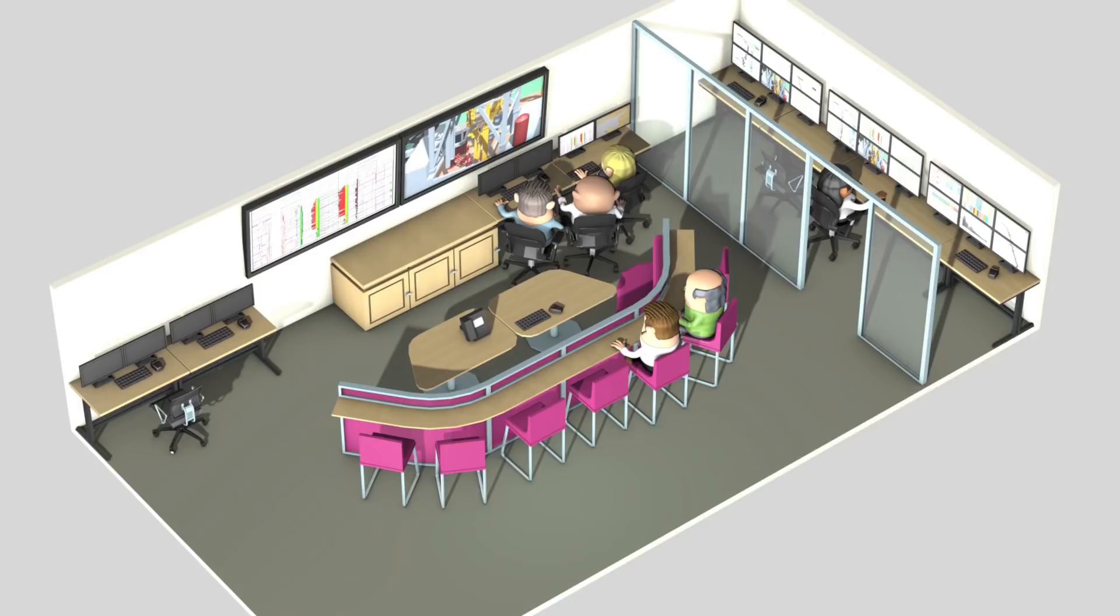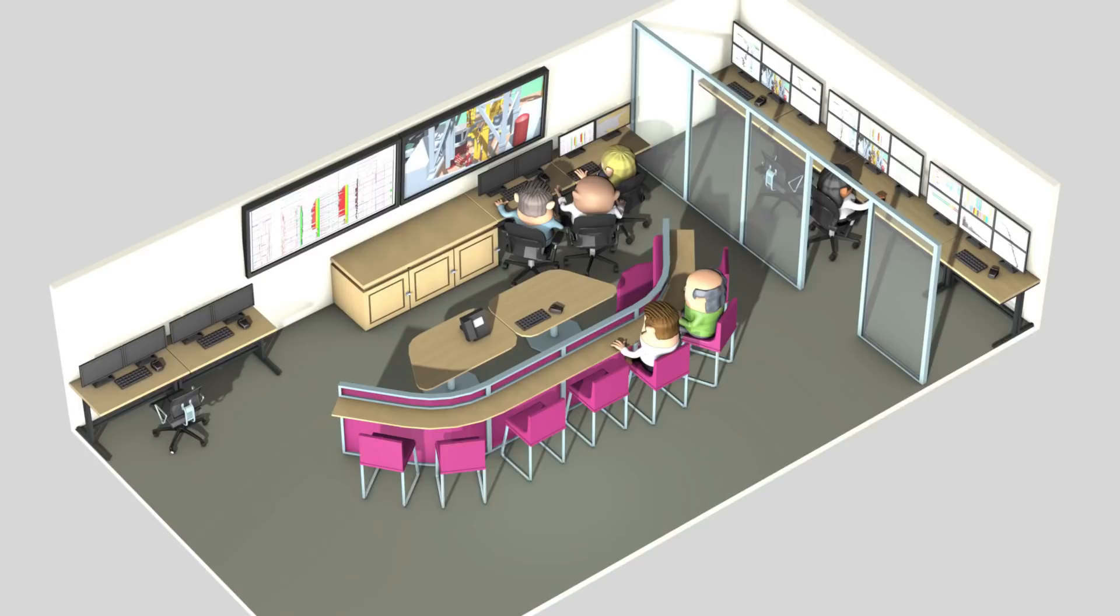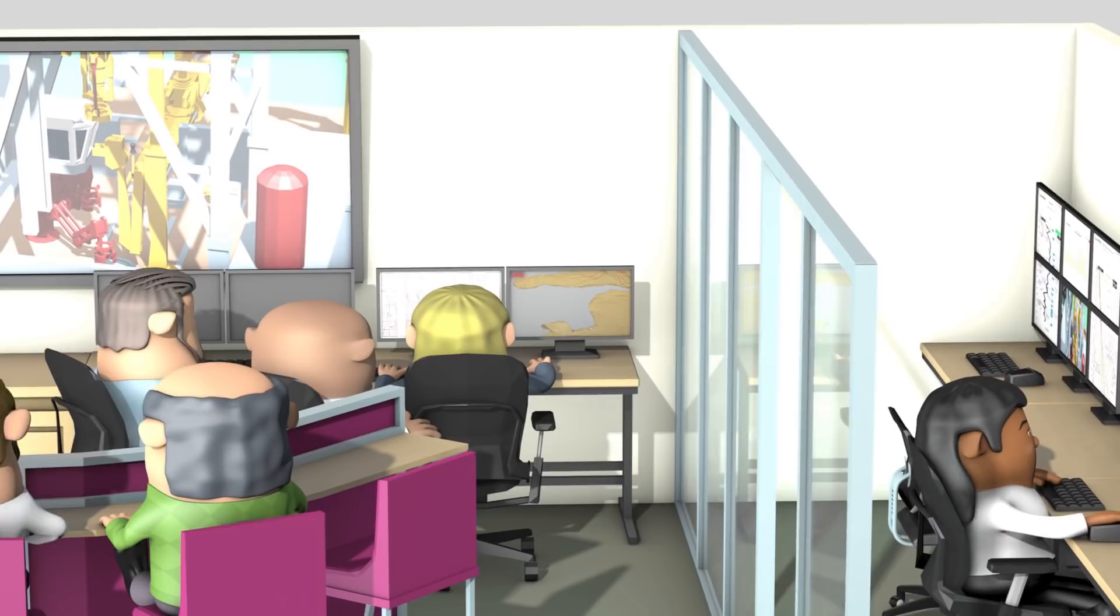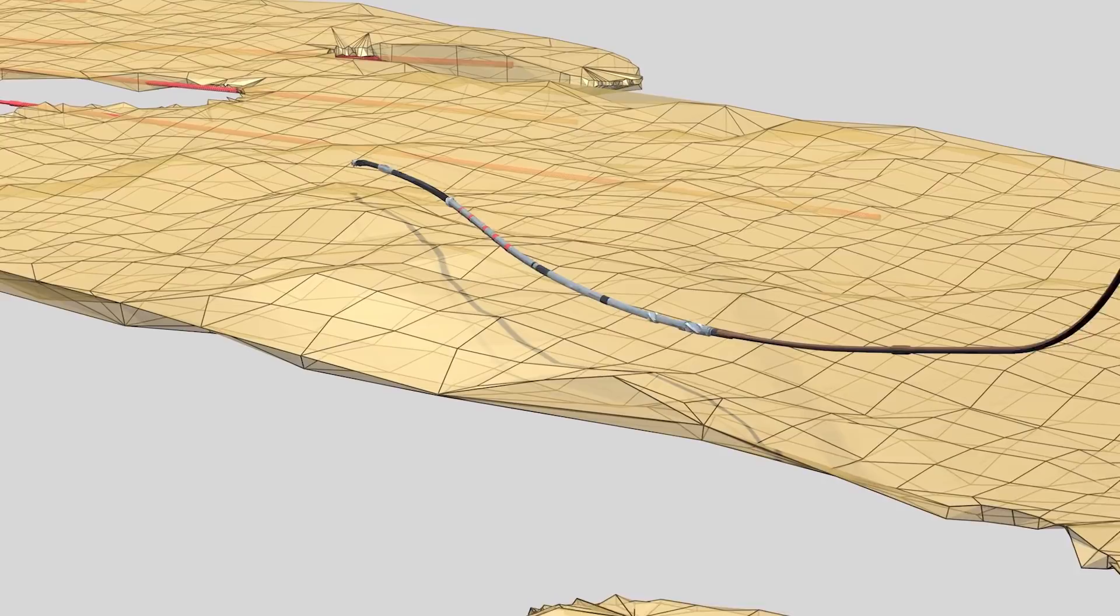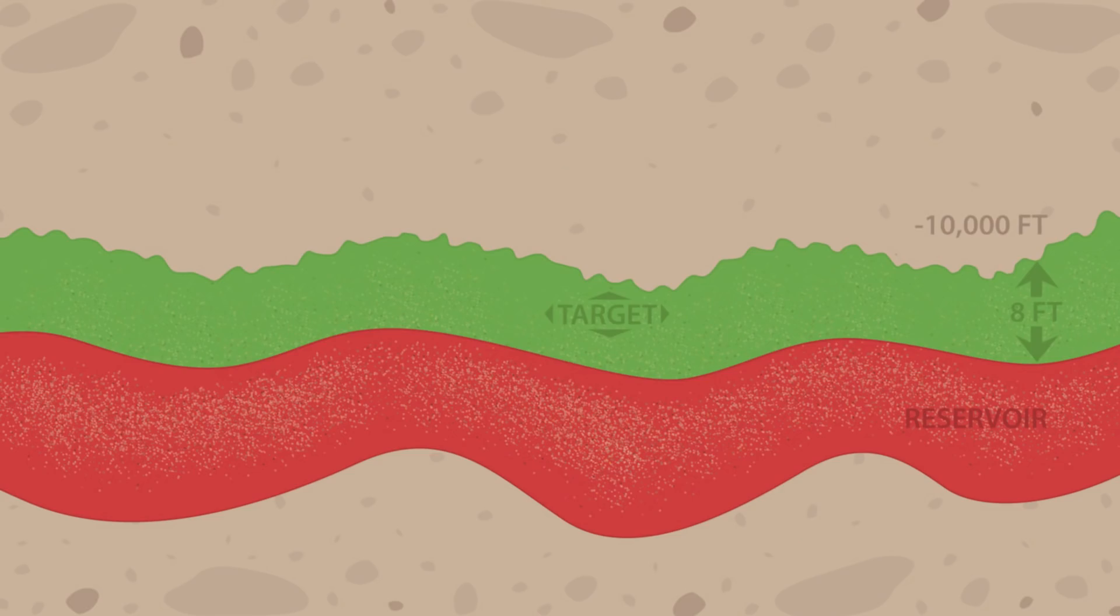The team began a delicate stage. The reservoir was too depleted to place the casing shoe inside, but placing it too far away might cause the well bore to collapse. Instead, the shoe was located 10,000 feet down and placed just above the reservoir into a formation just 8 feet thick.